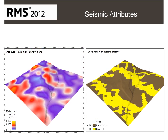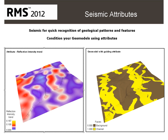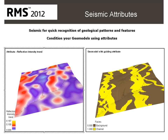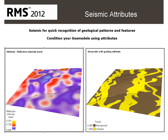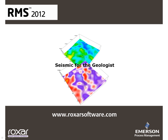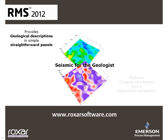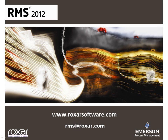This new functionality means you can get the most out of your seismic data by aiding identification of faults and discontinuities and providing quick recognition of geological patterns and features. Furthermore, you will be able to better quantify the rock and fluid properties in your reservoir and condition your models to all this new information as attributes are incorporated into the geomodelling workflow. Both the new seismic attributes and seismic inversion tools are major contributors to RMS 2012, bringing seismic straight into the hands of the geologist with their simple, straightforward presentation and descriptive user interface, without restricting their ability to perform the complex calculations required from a geophysical perspective. If you have any questions or want more information on other functionality in RMS, please contact us at rms@roxar.com.